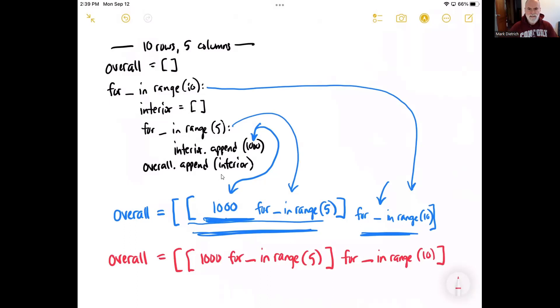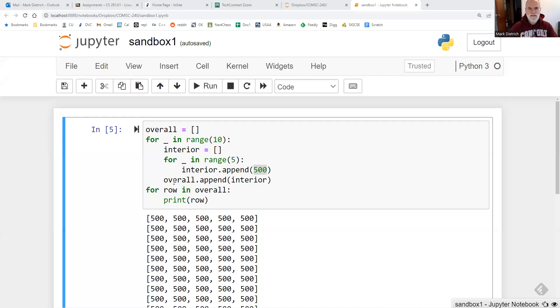All right. So I'll give you a second to kind of write this down or get a good navigational reference for it. And then we'll go back and look at the code that's going to make this successful. All right. So we're back in our Jupyter notebook.